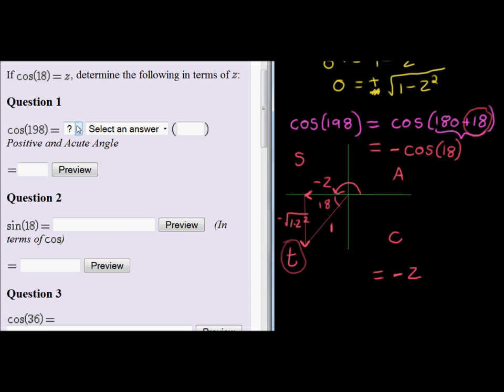We're answering with this step, and now in terms of z, because that's what the question asks us: determine the following in terms of z. In terms of z, our answer is -z.